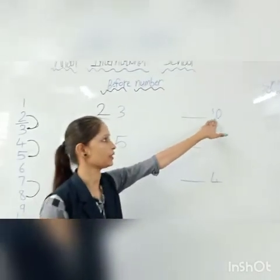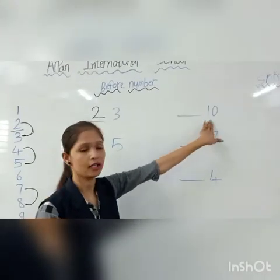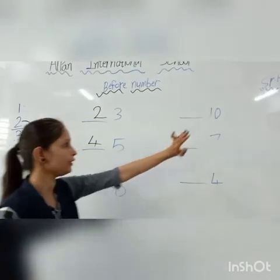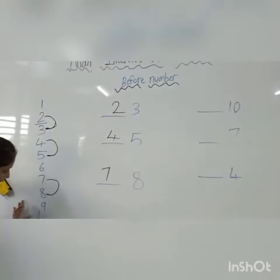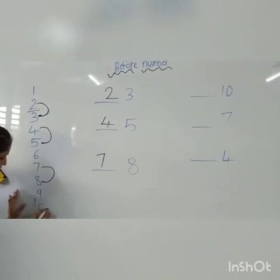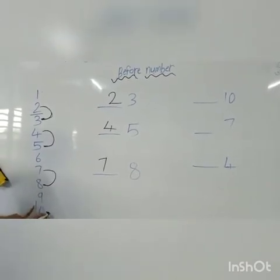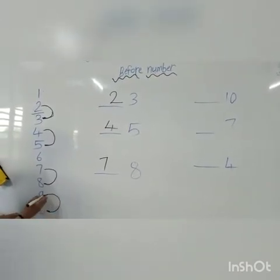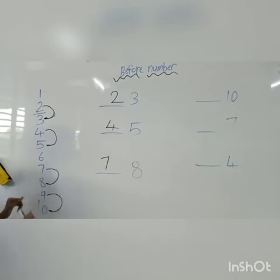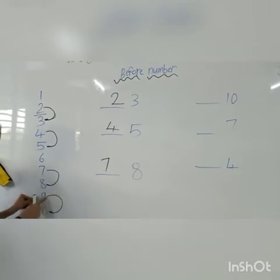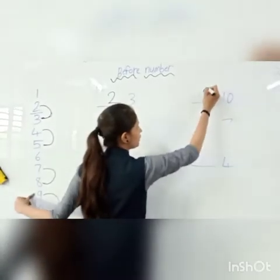This is 10. What is this? This is 10. Where is 10? Here — 9. What comes before 10? The answer is 9.